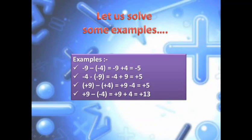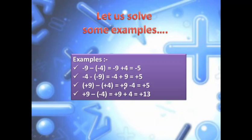Minus 4 minus minus 9: minus 9 is next to the subtraction sign, so the opposite of minus 9 is plus 9. Minus 4 is written as it is. So minus 4 plus 9 — opposite signs means subtract. 9 minus 4 is 5. The bigger number is 9 having positive sign, so the answer is plus 5. Plus 9 minus plus 4: opposite of plus 4 is minus 4. Plus 9 is written as it is — opposite signs, so subtract. 9 minus 4 is 5. The bigger number is 9 with positive sign, so write plus 5 or just 5.